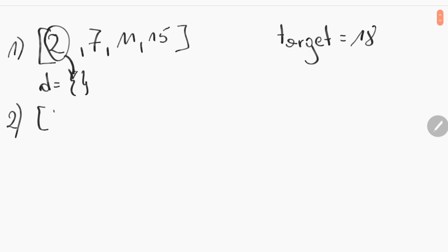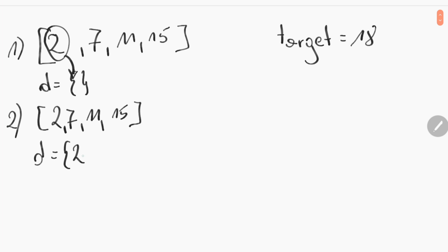In the second step the array looks exactly the same, but the dictionary now has key=2, value=0, because the number 2 is at index zero. Now we check the second value, 7. Target minus 7 is 11. We check if the dictionary contains a key equal to 11 — it doesn't.